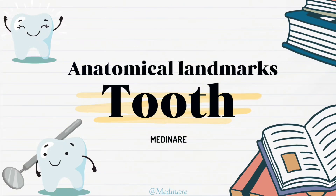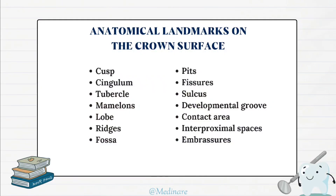Hello everyone, welcome back to Medineer. This is part 2 of the anatomical landmarks of the tooth. In part 1 we have seen some anatomical landmarks of the crown of the tooth in detail, like cusp, cingulum, tubercle, mamelons, lobes, ridges and fossa. The link of that video is in the description box below. Now let's begin with part 2.